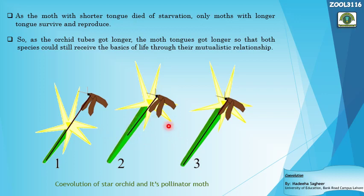Recalling Darwin's theory — variety of moths with long proboscis already existed in the population, and natural selection selected for generations with longer proboscis. The orchid tubes got longer and the moth tongues got longer, so that both species could still receive the basics of life through their mutualistic relationship. Both co-evolved in response to changes in each other's traits.